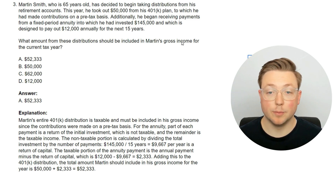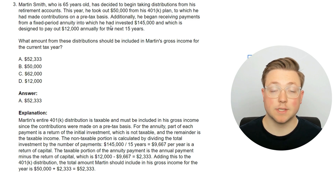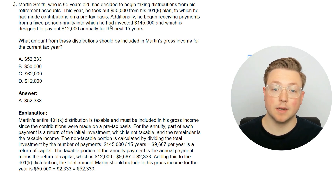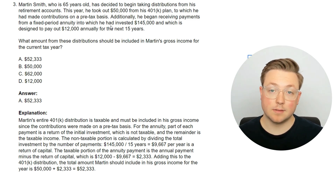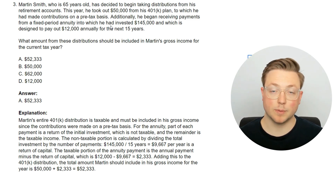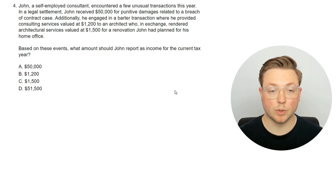Pretty simple there. For the annuity, since it's a fixed period one, you just take what was put in, divide it by the 15 years, and whatever that is, that portion of the annual payment is not taxable because it's just a return of capital.